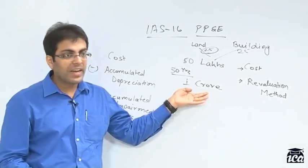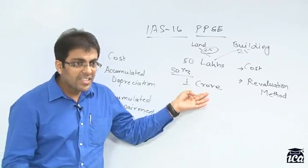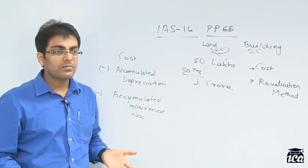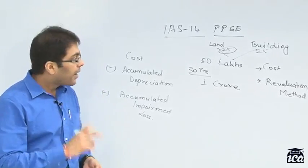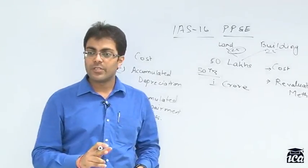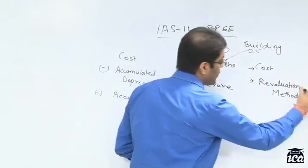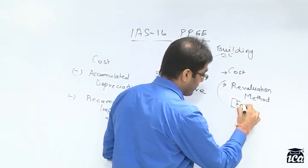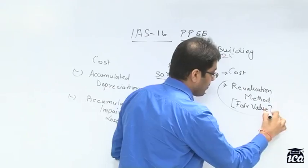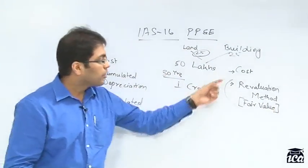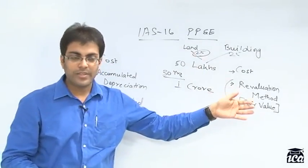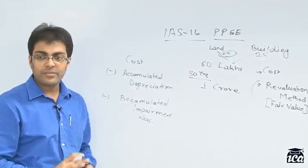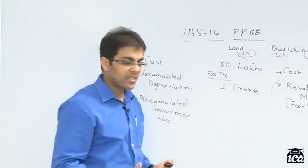But if you want to sell the house today, you would get at least 1 crore. So is your books of accounts under this method showing a true and fair view? It is not. Under IFRS, it talks about the fair value principle, and accordingly IFRS allows you a revaluation method which is essentially a fair value method. Either of these methods can be used — you can adopt the cost model or the revaluation model.